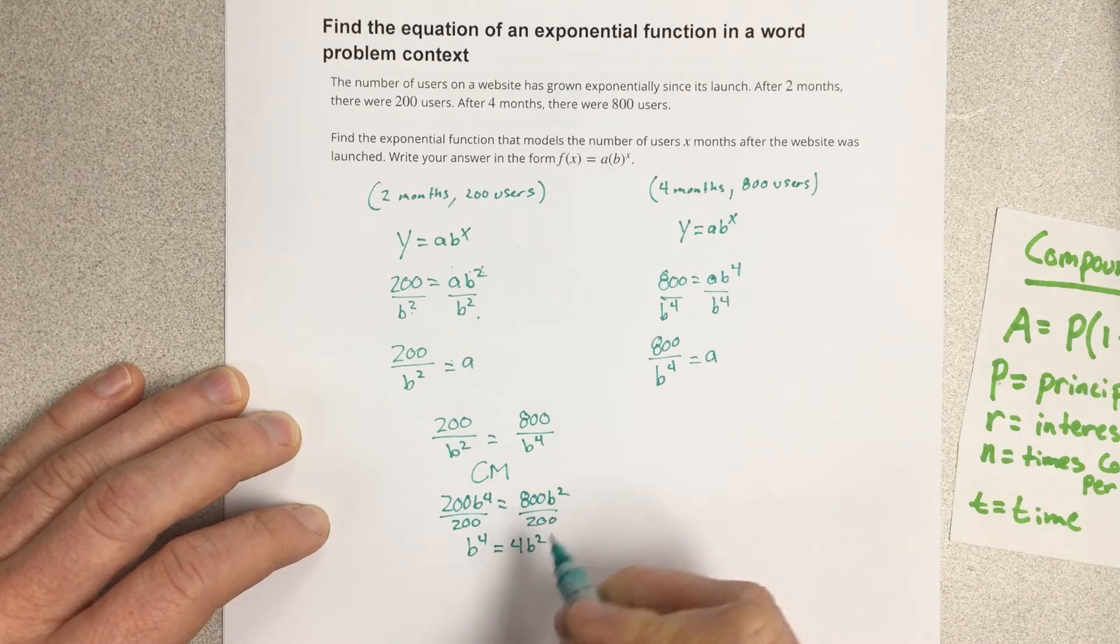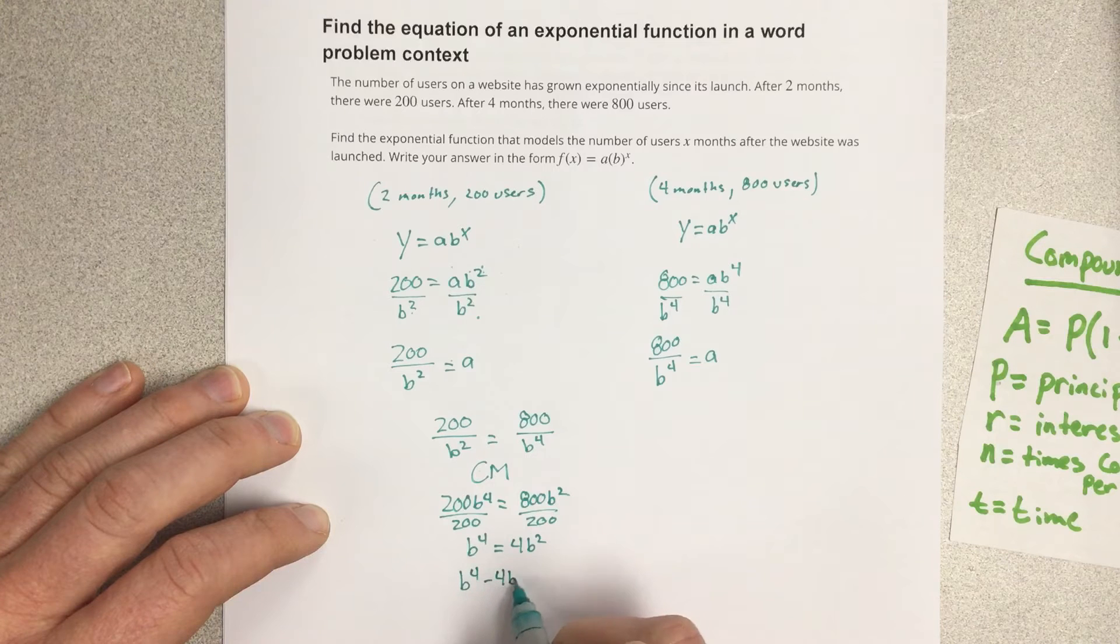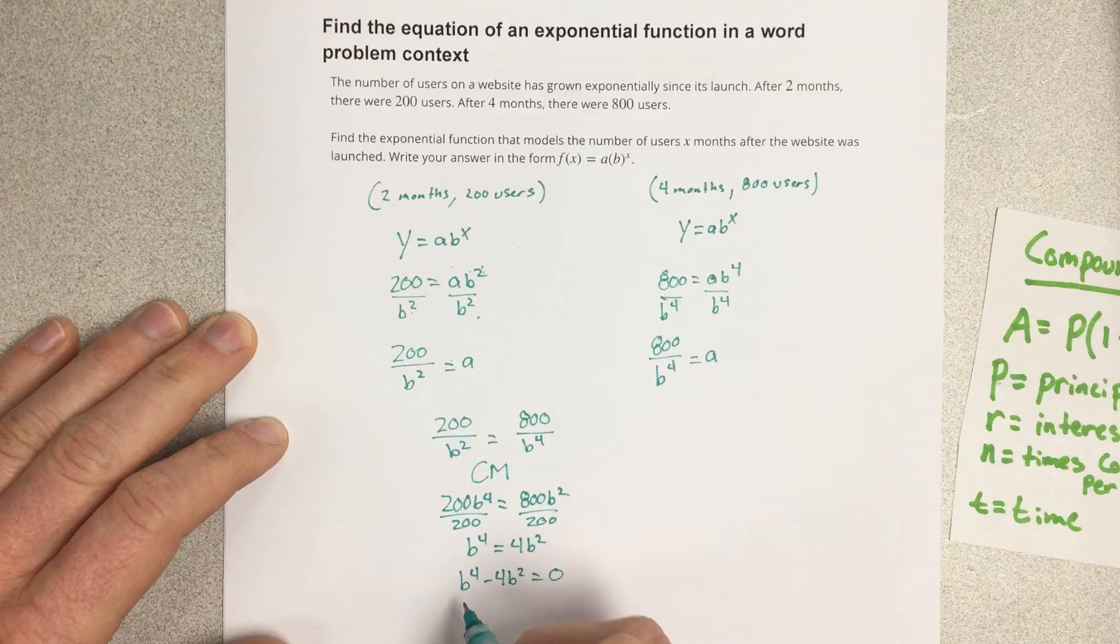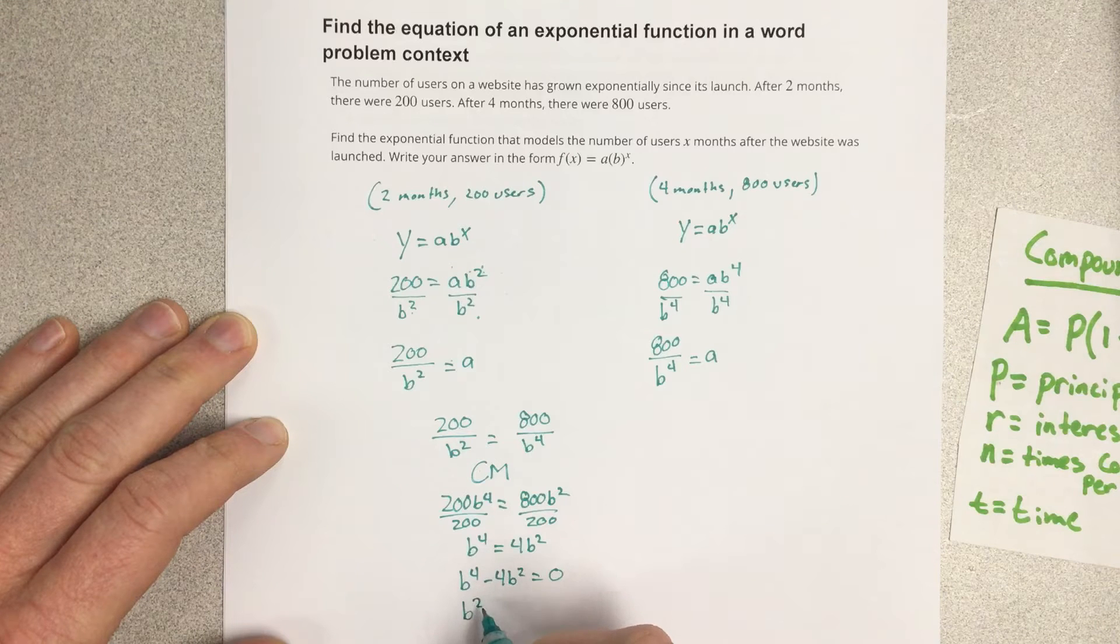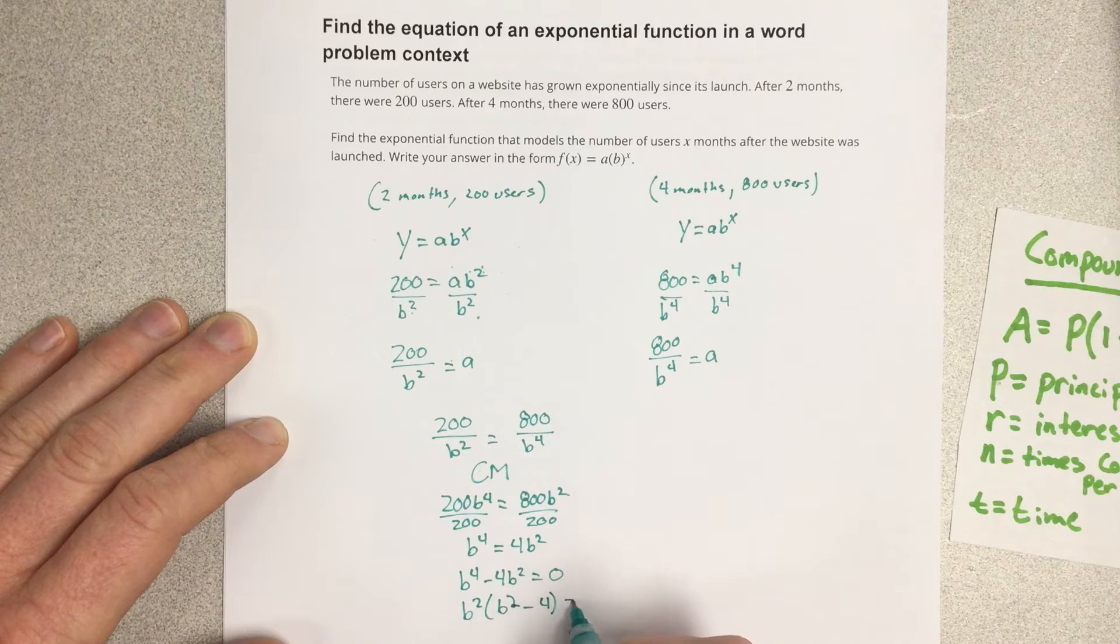It's a polynomial so I got to get it equal to zero. So I'm going to say b to the fourth minus 4b squared equals zero. Factor b squared out, so it's b squared with b squared minus 4 on the inside.